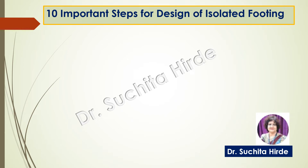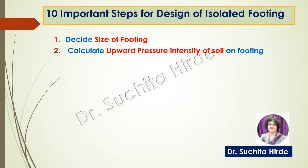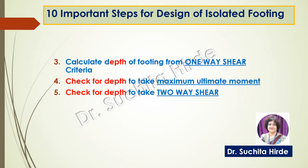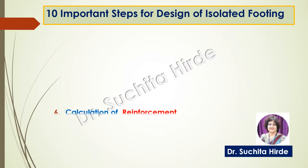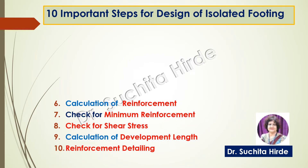So far in the first video we have seen how to decide the size of footing and how to calculate upward pressure intensity of soil on the footing. In the second video we decided the depth of the footing based on three criteria: one-way shear, two-way shear, and maximum ultimate moment. Now in this video we are going to calculate the reinforcement, check for minimum reinforcement, check for shear, calculate development length, and then do reinforcement detailing.